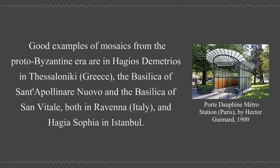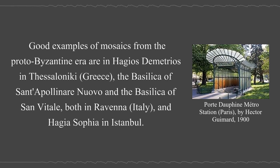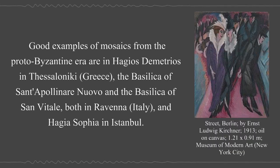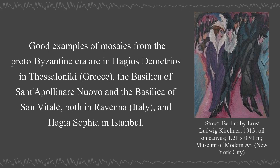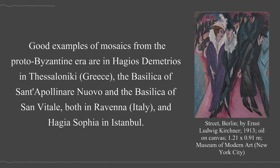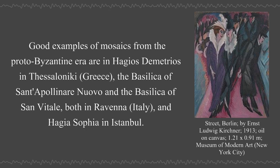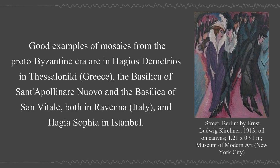Good examples of mosaics from the proto-Byzantine era are in Hagios Demetrios in Thessaloniki, Greece, the Basilica of Sant'Apollinare Nuovo and the Basilica of San Vitale, both in Ravenna, Italy, and Hagia Sophia in Istanbul.